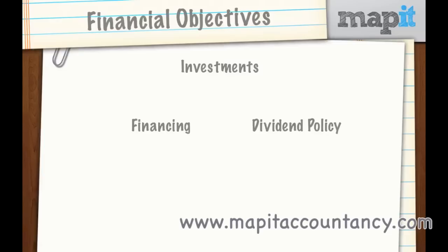If you know all three areas in good detail, you're going to do very well. It's often said that this is a triangular process because each of these areas are interlinked. And if the examiner is going to look at this particular area, it's the interlinkage between the three that they're going to focus on.